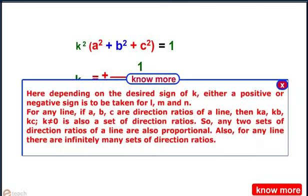Note that depending on the desired sign of K, either positive or negative, the sign is to be taken for L, M, and N. For any line, if A, B, C are the direction ratios of a line, then KA, KB, and KC where K should not be equal to 0 is also a set of direction ratios. So any two sets of direction ratios of a line are also proportional. Also, for any line, there are infinitely many sets of direction ratios.